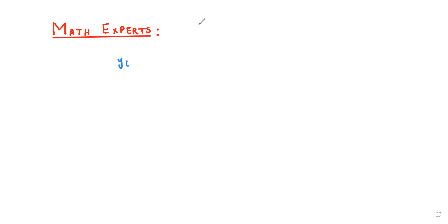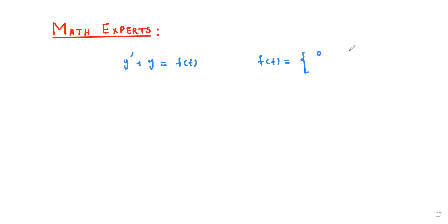Today we have a problem: a first order differential equation, y prime of t plus y is equal to f of t. Here f of t is a piecewise continuous function, which equals 0 for 0 less than t less than π, and the second piece is 3 cos of t for t greater than or equal to π. And we have the initial condition y of 0 is equal to 5.